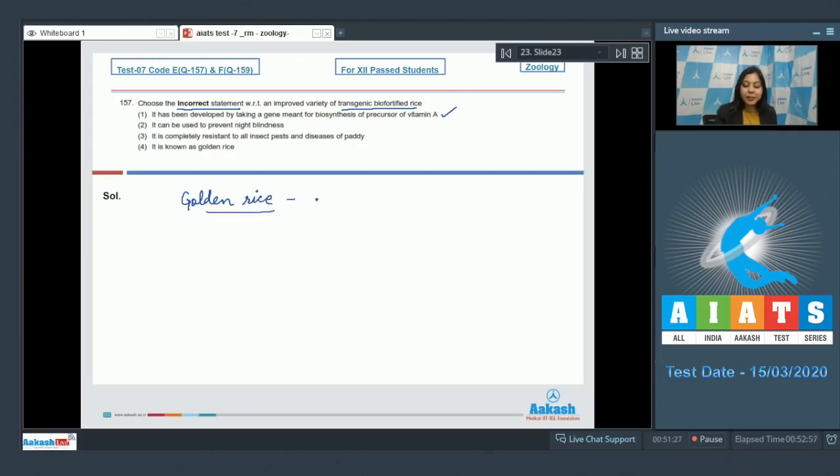is biofortified by the addition of a gene coding for beta carotene, which is a precursor of vitamin A. Number two, it can be used to prevent night blindness. This is also correct as deficiency of vitamin A causes night blindness or nyctalopia.